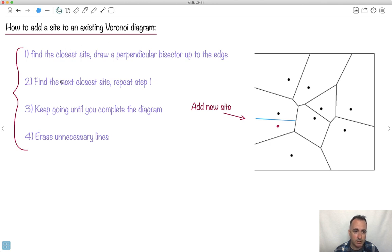Now we're supposed to find the next closest site and repeat step one. So what does that mean? Well, now that we're here, do you notice we need to account for this site and this site. So let's think about the perpendicular bisector between those two and draw something.